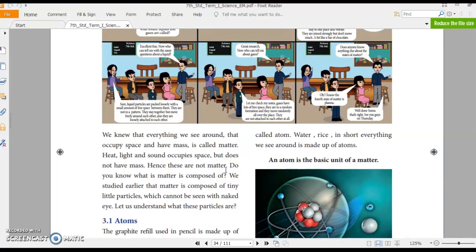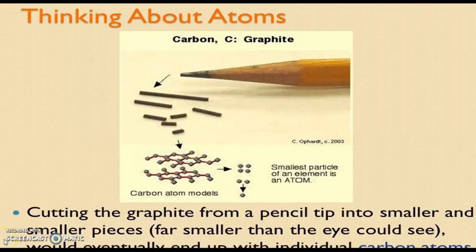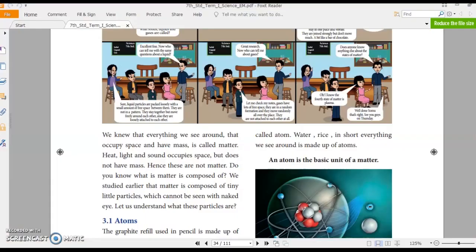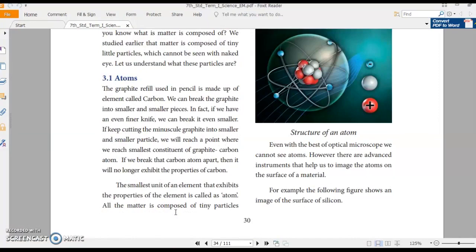Imagine that you have a pencil with graphite refill. Don't worry, you can consider the pencil that you used to draw. Okay? You just want to break it down. We will get smaller particles. Whenever we cut it, we will get much smaller particles. And if we keep on cutting it, what do we get? Yes, finally, we get carbon atoms which has all the properties of graphite or the lead that we used to cut. Okay? But if we still divide it, we still get tiny particles. But those tiny particles does not have the qualities of a graphite. So the smallest unit of element that exhibits the properties of the same element is called an atom.